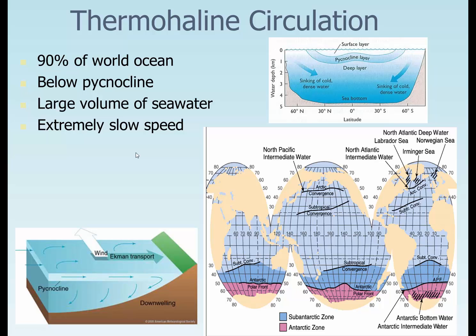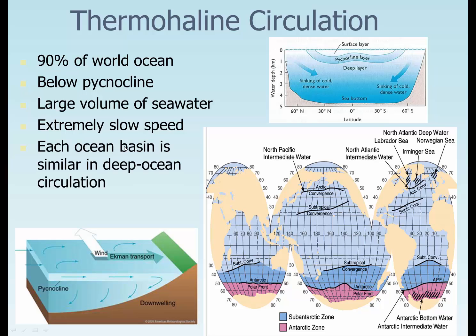The Antarctic bottom water actually sinks and moves at about 2 to 3 feet per hour, so it's a relatively slow process. Each ocean basin is very similar because the ocean density down there is actually very similar, and it's moving across abyssal plains. It will move around seamounts and mid-ocean ridges, and it will move down into the trenches, but it will basically move from north to south.